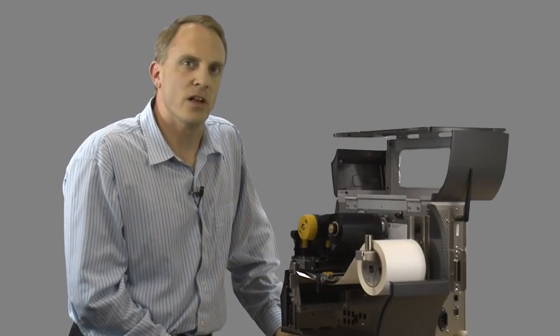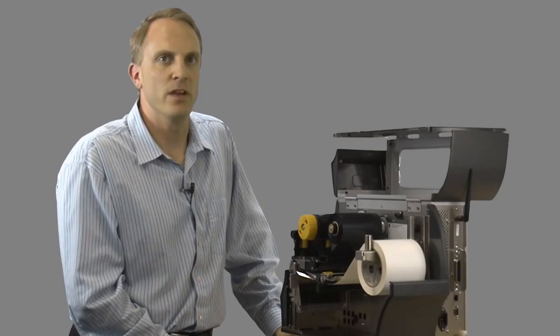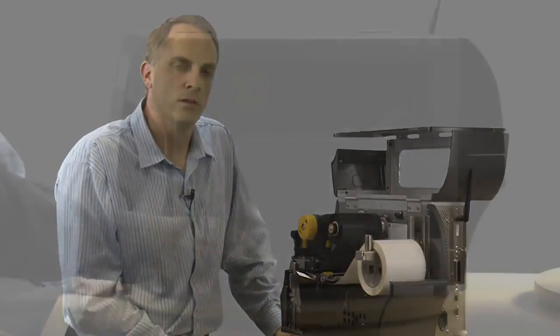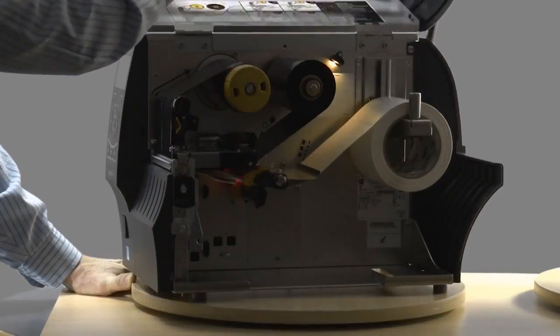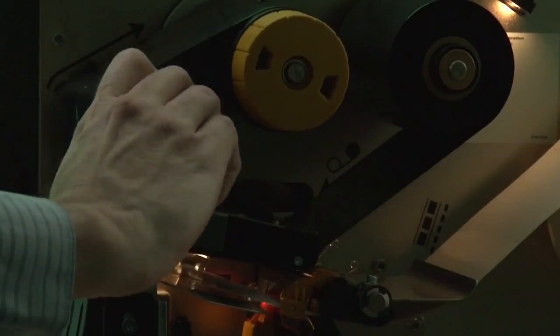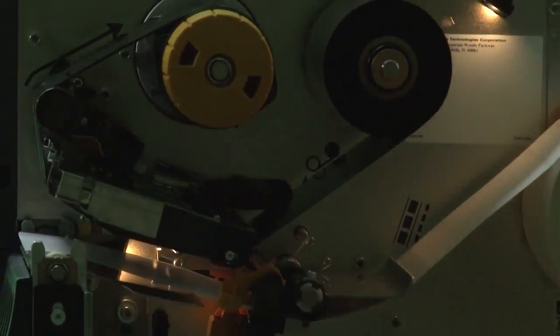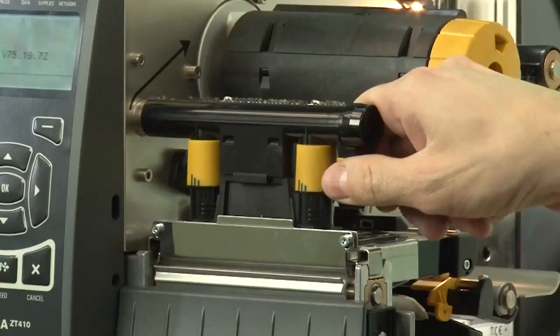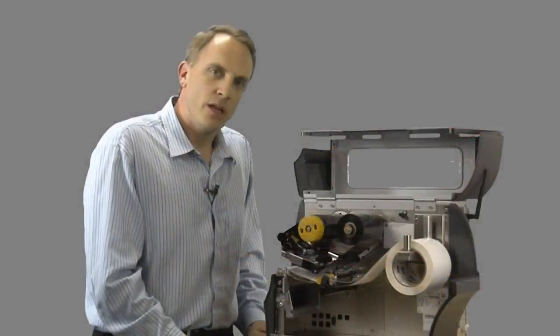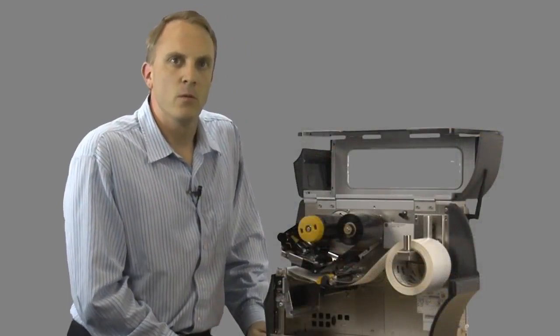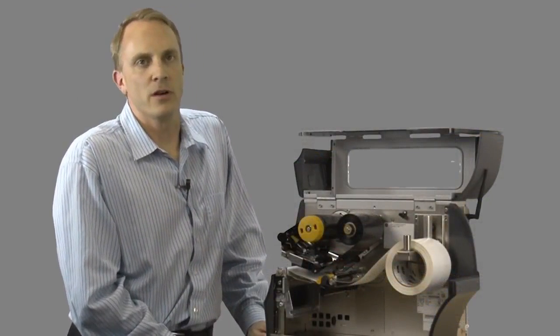The ZT400 has also greatly advanced the ease of use via a much improved user experience. The printer has lighted media and ribbon paths, controlled by the opening and shutting of the printer door. The new flip-up side loading mechanism provides efficient media and ribbon loading while eliminating potential ribbon wrinkle startup issues.